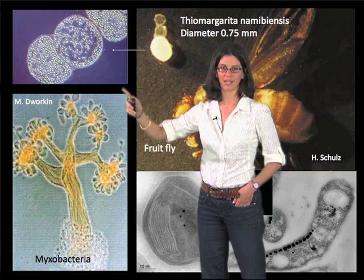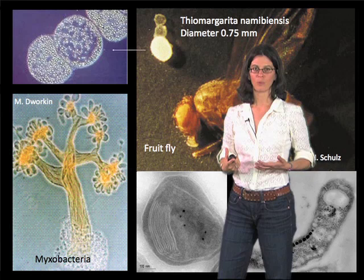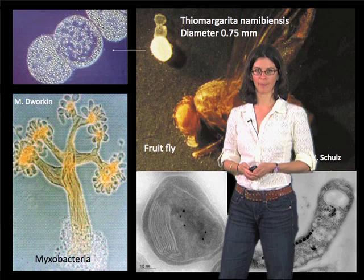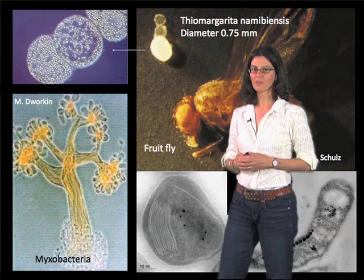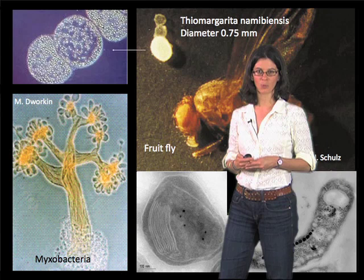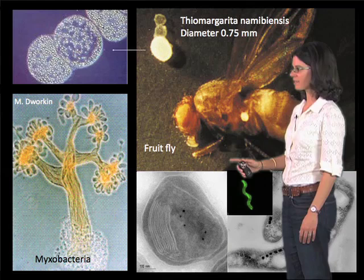When you look at it in more detail, the reason it's so big is that it contains a huge vacuole filled with nitrate, which is one of the substrates it uses to power its metabolism. It couples the reduction of nitrate to a more reduced form of nitrogen, to the oxidation of sulfide, and in this way powers energy for growth.